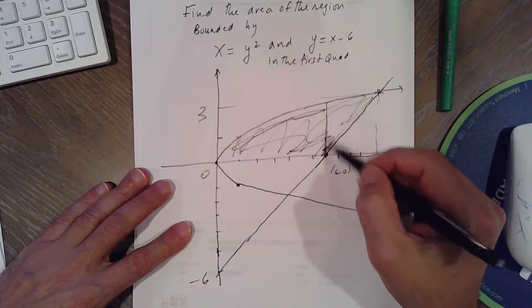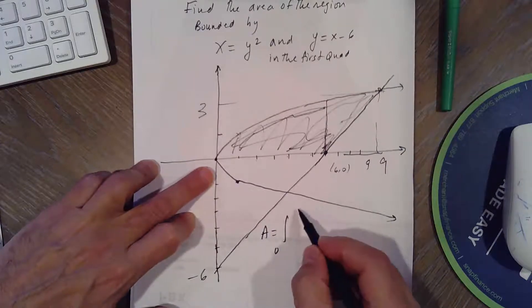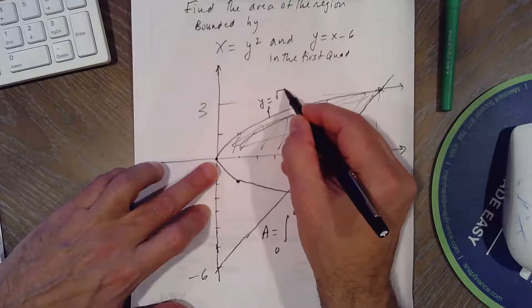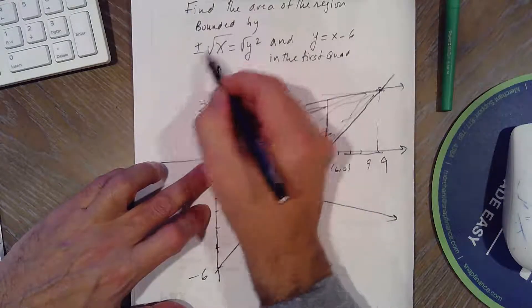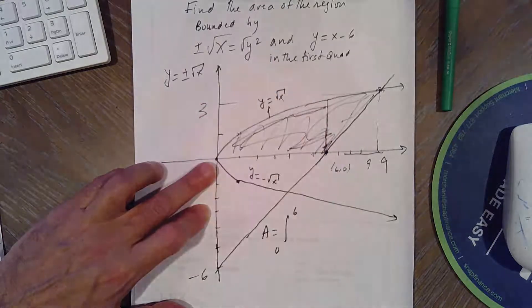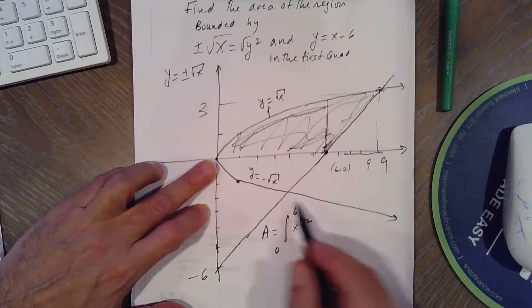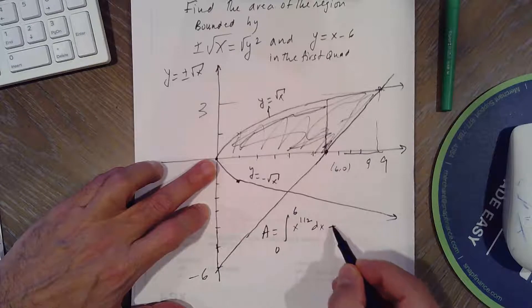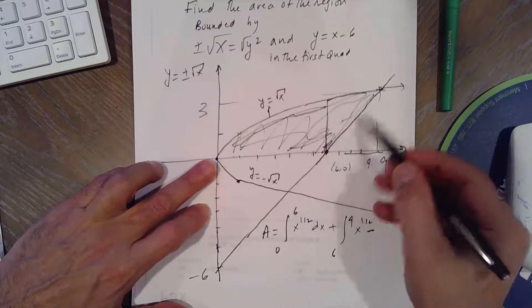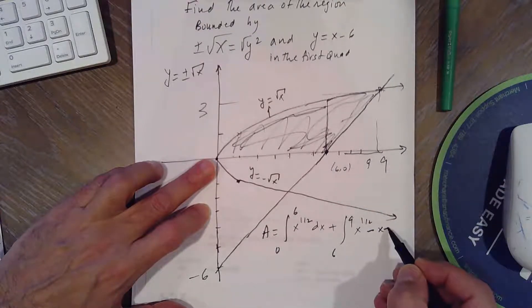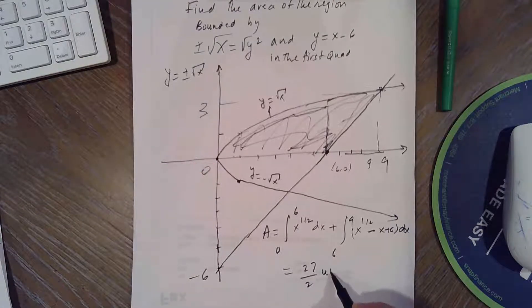Up to 6, it's going to be area upper minus lower, 0 to 6. It's going to be Y equals square root of X. Remember, this is Y equals negative root of X. Because if you square root, you get Y equals plus or minus, because you want Y as a function of X. So if you do that, from 0, it will be X to the 1 half minus 0, which is the X axis. And then from 6 to 9, it would be upper, which is square root of X, minus lower, which is X minus 6. So minus X plus 6 DX. If you integrate this, you get 27 over 2 units squared.